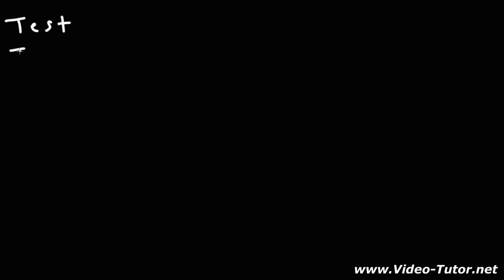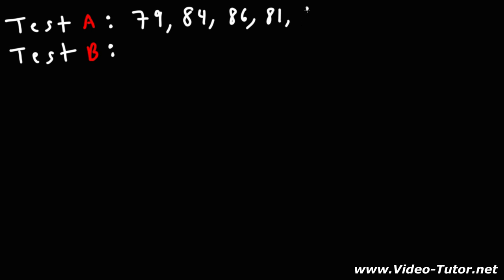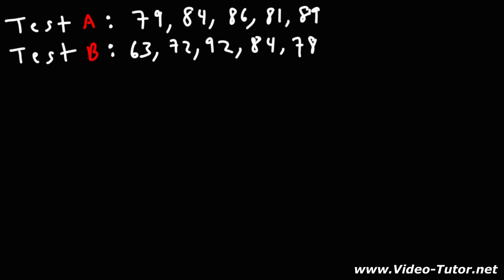Now let's work on an example problem. We have two data sets — two different tests — with a class of 10 students. Five students took test A and the other five took test B. For test A, the scores are 79, 84, 86, 81, and 89. For test B, the scores are 63, 72, 92, 84, and 78. With this information, calculate the coefficient of variation for each of the two tests.